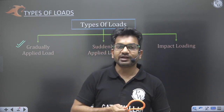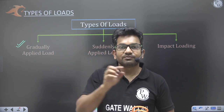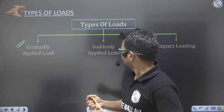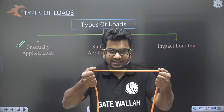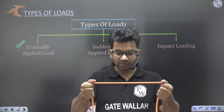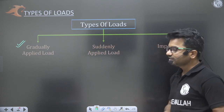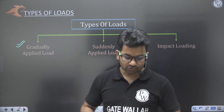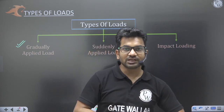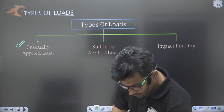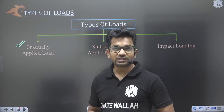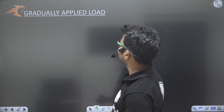For gradually applied load, loading starts from 0 and reaches a maximum value of P applied gradually — slowly and slowly we increase the load to maximum value P. Now for suddenly applied load, I take this bar and apply the load suddenly — the time interval of application is very small. And for impact load, there will be an impact created. Now let us discuss the stresses generated in all three types of loading.